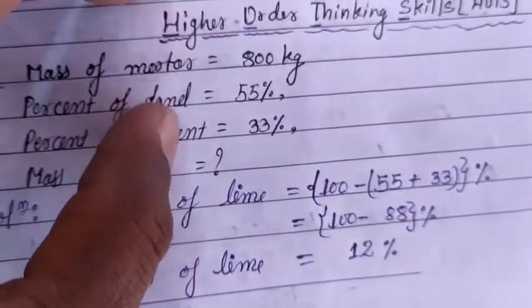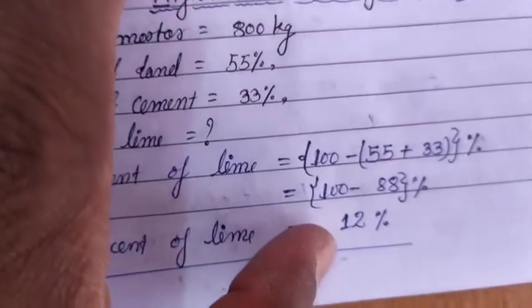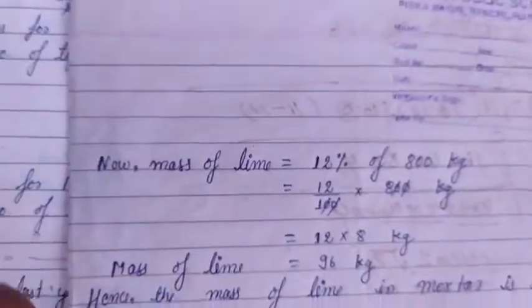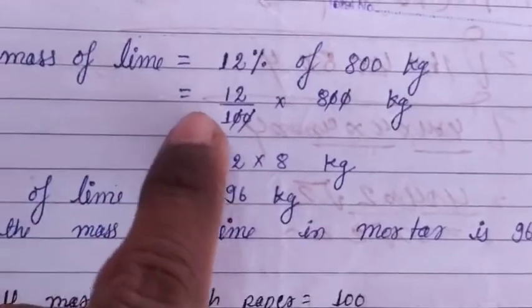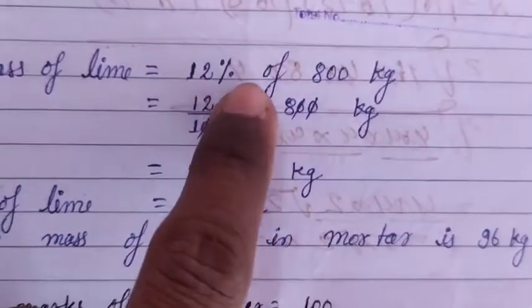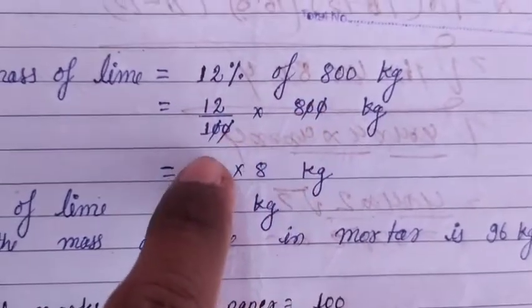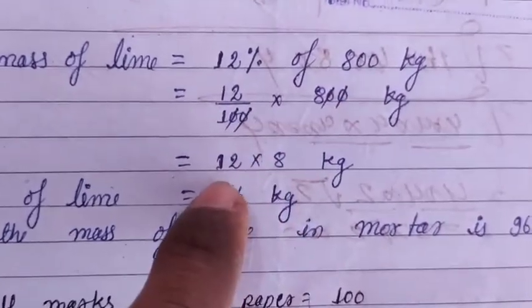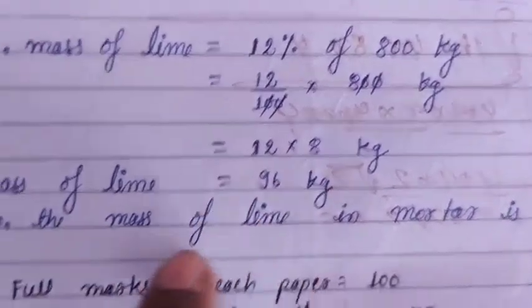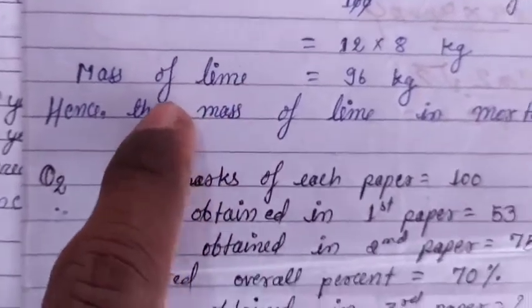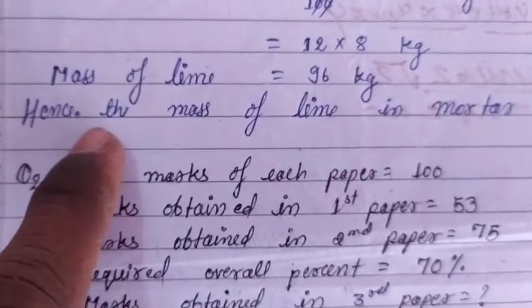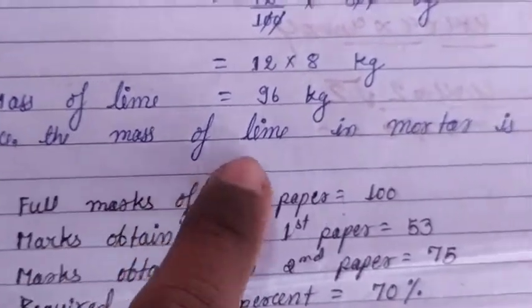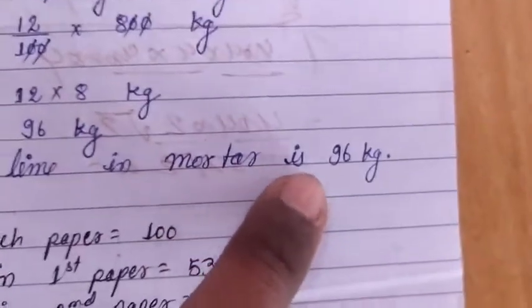Percent of lime is 12%. I subtracted the percent of sand and cement, so the rest is lime — that is 12%. Now, mass of lime can be evaluated by 12% of 800 kg, that is 12 upon 100 multiplied by 800, which equals 96 kg. Always add a closing statement: Hence, the mass of lime in mortar is 96 kg.